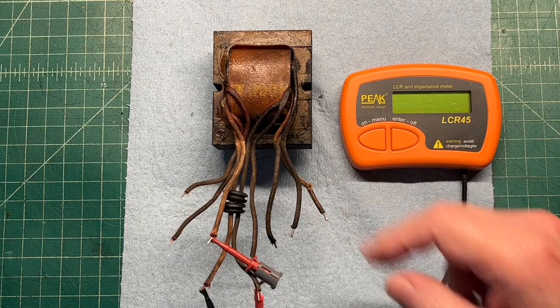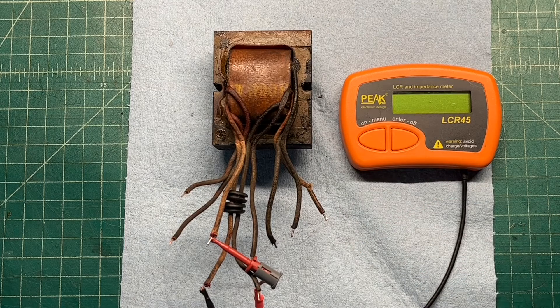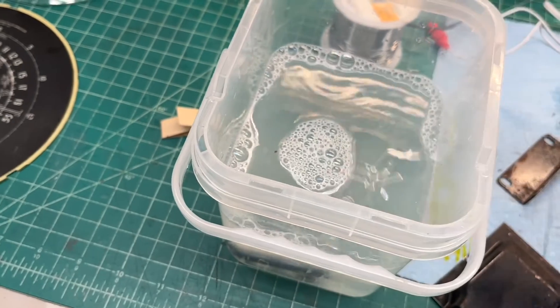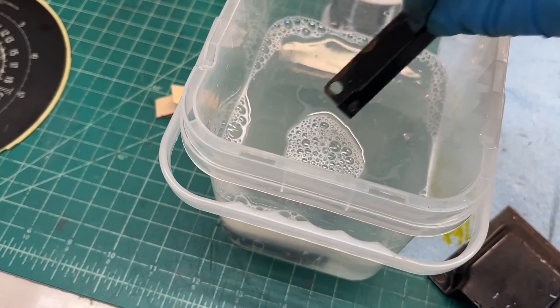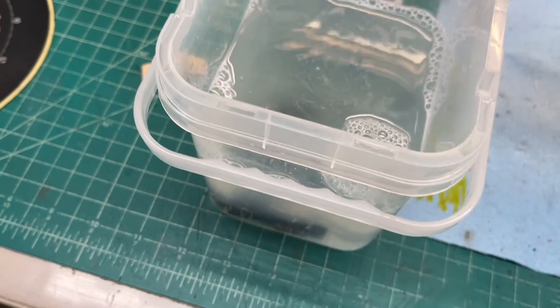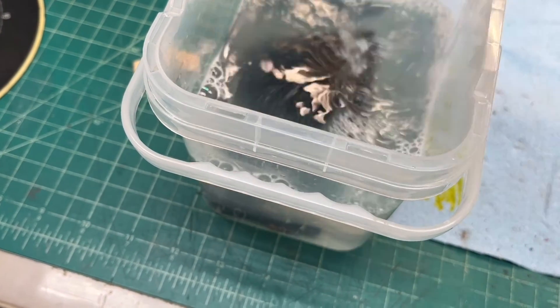Hey folks, thanks for joining me. I've got the power transformer for the Zenith 5S127 taken apart. You can see I've got the housing soaking in some citric acid to get rid of the rust and remove the old flaky paint as well.